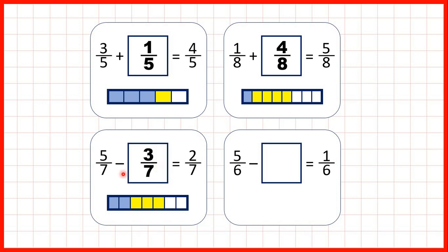We know that if the second number in a subtraction problem is missing, we can still use subtraction to find our missing number. Notice that 5/7 take away 2/7 is equal to 3/7, which gives us our missing fraction.